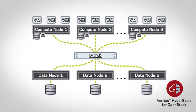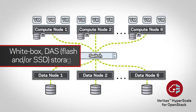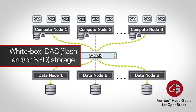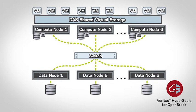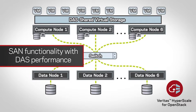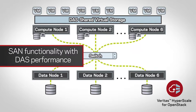Veritas Hyperscale for OpenStack helps you manage costs through the ability to use commodity DAS storage while still obtaining the performance you require, and not having to rely on expensive converged offerings. Thus, it provides SAN functionality with DAS performance.